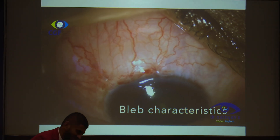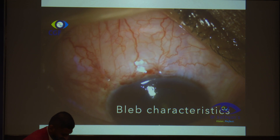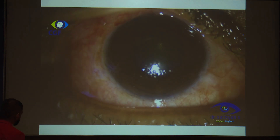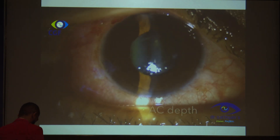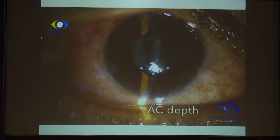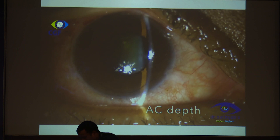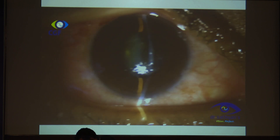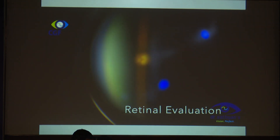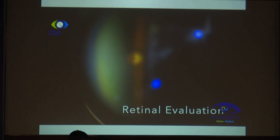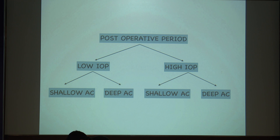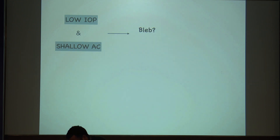First, you see the IOP; second, you see the bleb characteristics; then the anterior chamber depth; any reactions in the anterior chamber; and finally the fundus examination. In the post-operative period you can have a low IOP or a high IOP with a shallow or a deep AC.